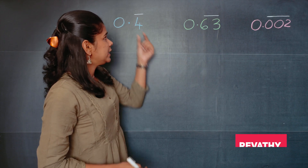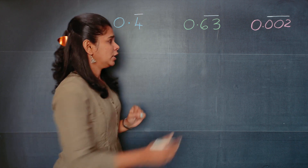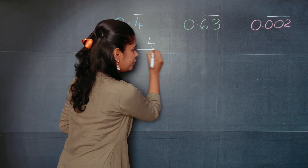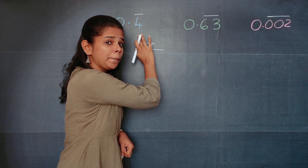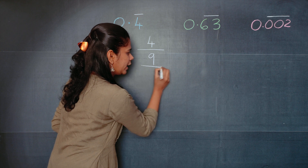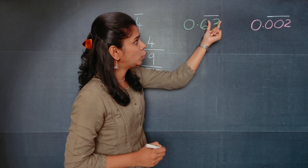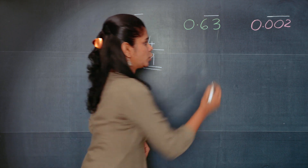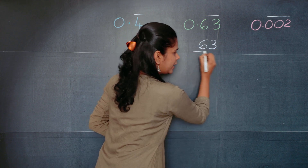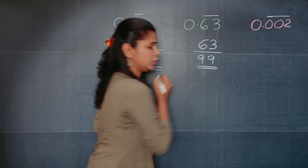In the first type, you can see under the bar there is only one number. So your answer will be: first write this number as such, divided by how many numbers are there under the bar — only one. So you write it as 4 by 9. Moving on to the next question, you can see there are two numbers under the bar, so the answer is 63 by 99.